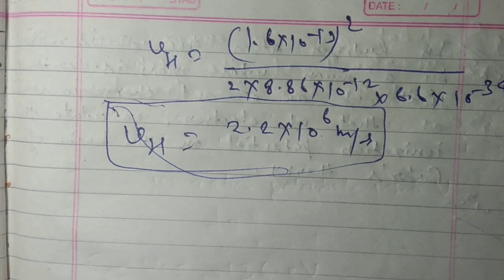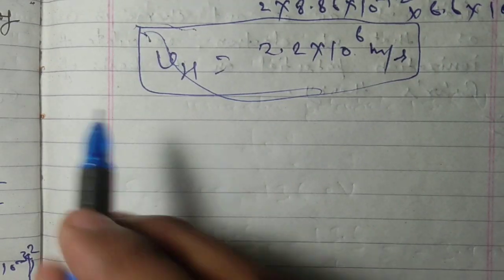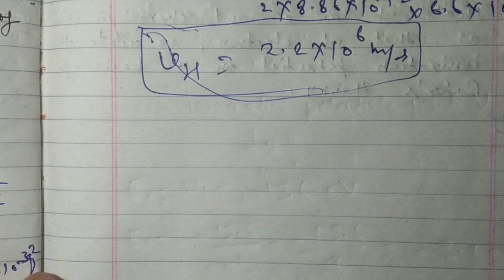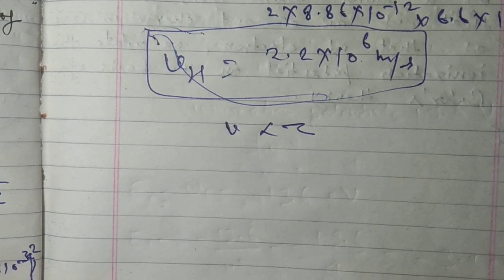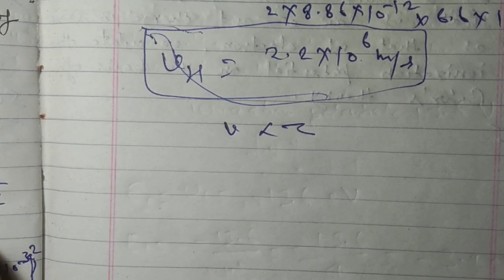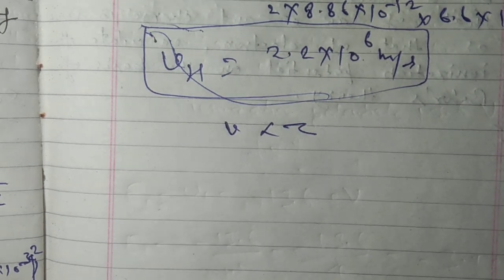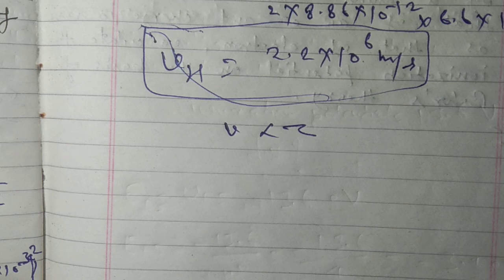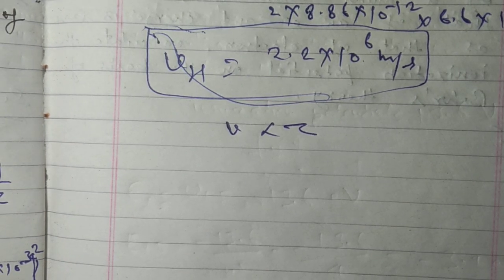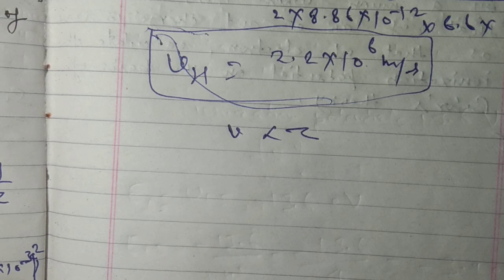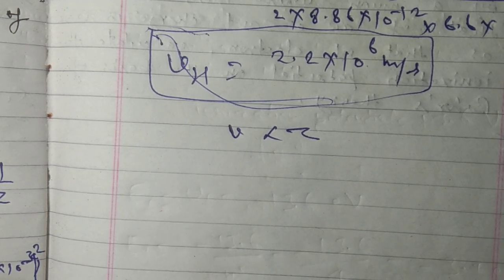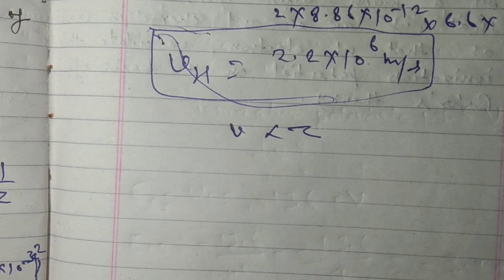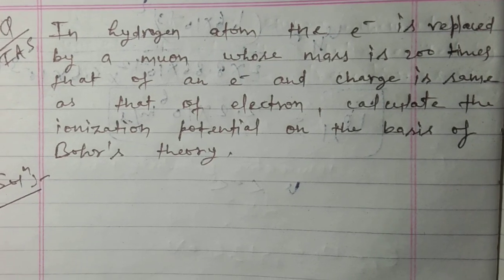With increasing atomic number, from the formula v is directly proportional to Z, so as atomic number increases, velocity of electron in the orbit also increases. So we have seen that radius decreases with atomic number — as atomic number increases, Bohr's radius decreases — but the speed of the electron increases as atomic number increases.